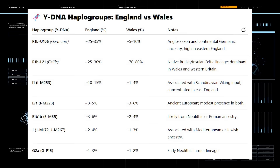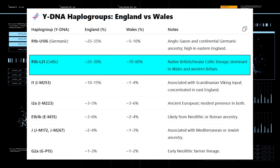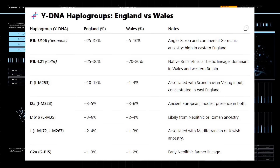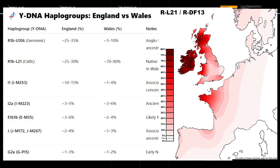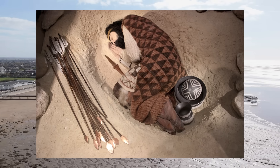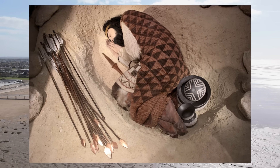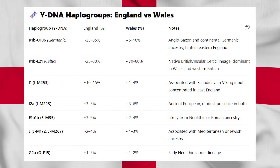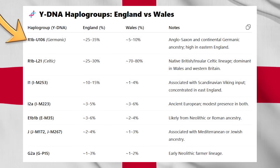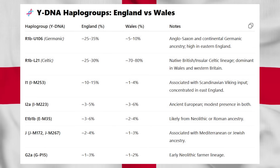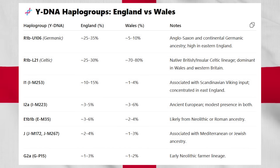Looking at Y-DNA haplogroups, Welsh men mainly belong to branches of R1b-L21, at around 70–80%. This is known as a Celtic lineage today, as it's very high amongst peoples who speak other Celtic languages, notably in Ireland and Scotland. This branch of R1b-L21 was brought into Britain and Ireland through the Bell Beaker culture and shows how Welsh men's Y-DNA hasn't been overly affected by later migrations. England, on the other hand, has much higher levels of the Germanic-connected haplogroup R1b-U106, reflecting largely the Anglo-Saxon influence as well as some Viking admixture — with Danish Vikings in particular having high levels of R1b-U106 given their proximity to Germany.